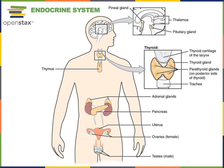Here we have a figure showing the major endocrine glands, or the major organs that form the endocrine system. An endocrine gland is a ductless gland that secretes hormones, which are chemical messages that travel through the blood to regulate target cells or target organs. So the hormone is a chemical message produced by an endocrine gland.